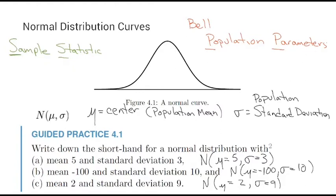When you see questions in journal articles, homework, tests, or quizzes and you see this N notation with two numbers, the first number is the population mean and the second number is the population standard deviation.